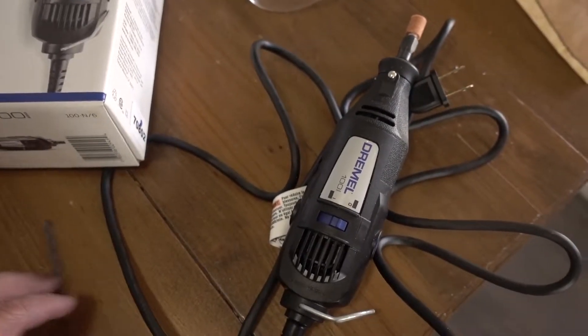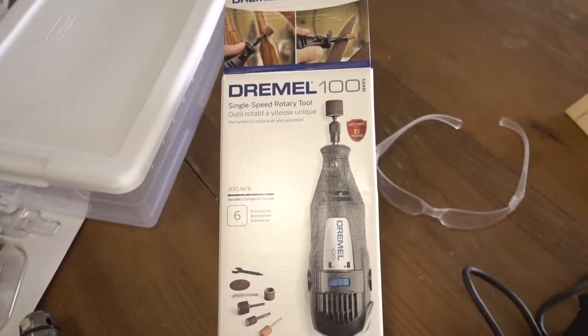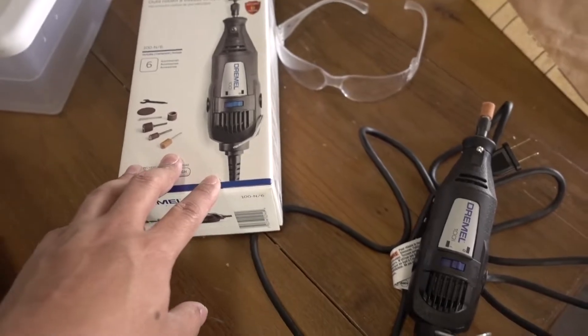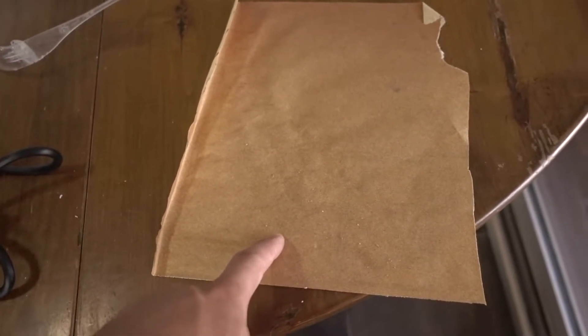You're going to need a Dremel. This was $30 at Walmart and this was a really nice thing to have for this. I'll show you why in a minute and then you're going to need sandpaper, and you're going to need goggles. The goggles is for the Dremel because that shoots plastic in your face. Sandpaper just to smoothen up the edges.